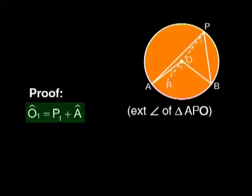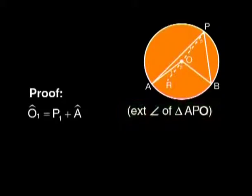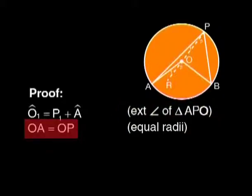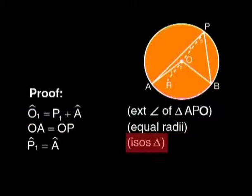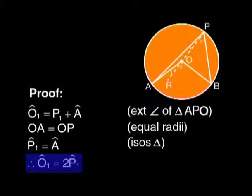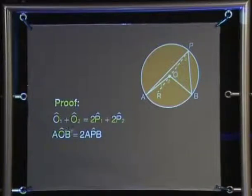Similarly, O1 equals P1 plus A because it is the exterior angle of triangle APO. And OA equals OP — equal radii. So P1 equals A by the isosceles triangle. Therefore, O1 equals twice P1. Adding O1 and O2, we get 2 times P1 plus 2 times P2, and this is the same as saying angle AOB equals twice angle APB.